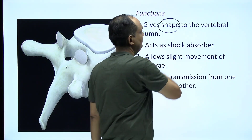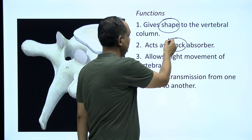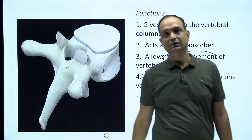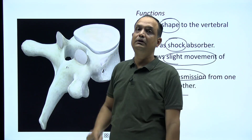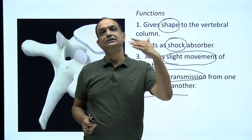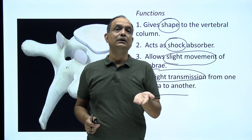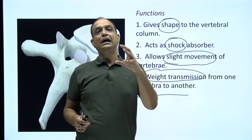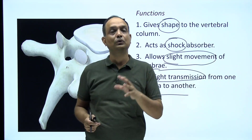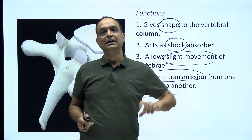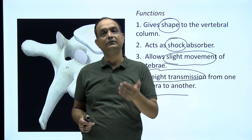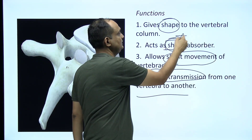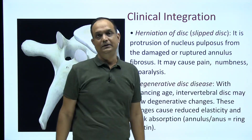The functions of the intervertebral disc include: providing shape to the vertebral column, acting as a shock absorber, allowing slight movements of the vertebrae, and transmitting weight from one vertebra to another. To summarize: the disc starts below C2 and ends above the sacrum; the center is a jelly-like material derived from the notochord, later replaced by fibrocartilage; it is surrounded by concentric lamellae with oblique fibers perpendicular to adjacent layers.